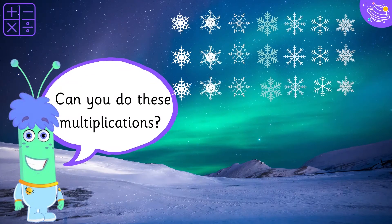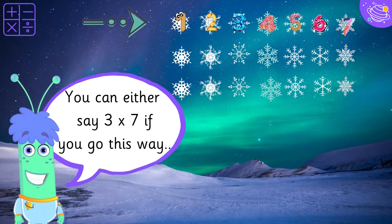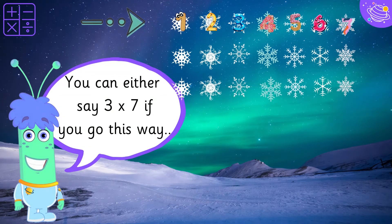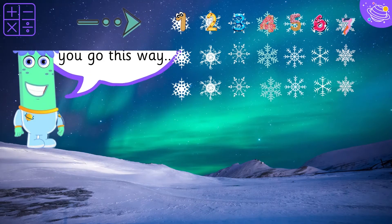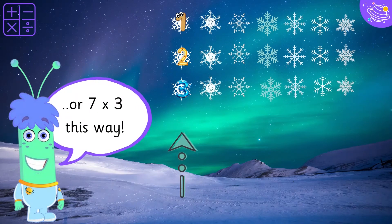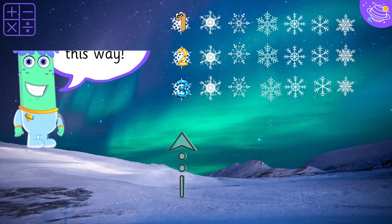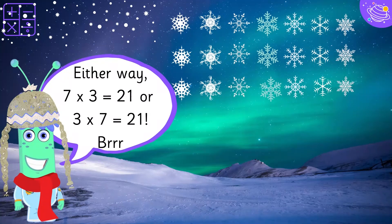Can you do these multiplications? You can either say 3 times 7 if you go this way, or 7 times 3 equals 21 this way.